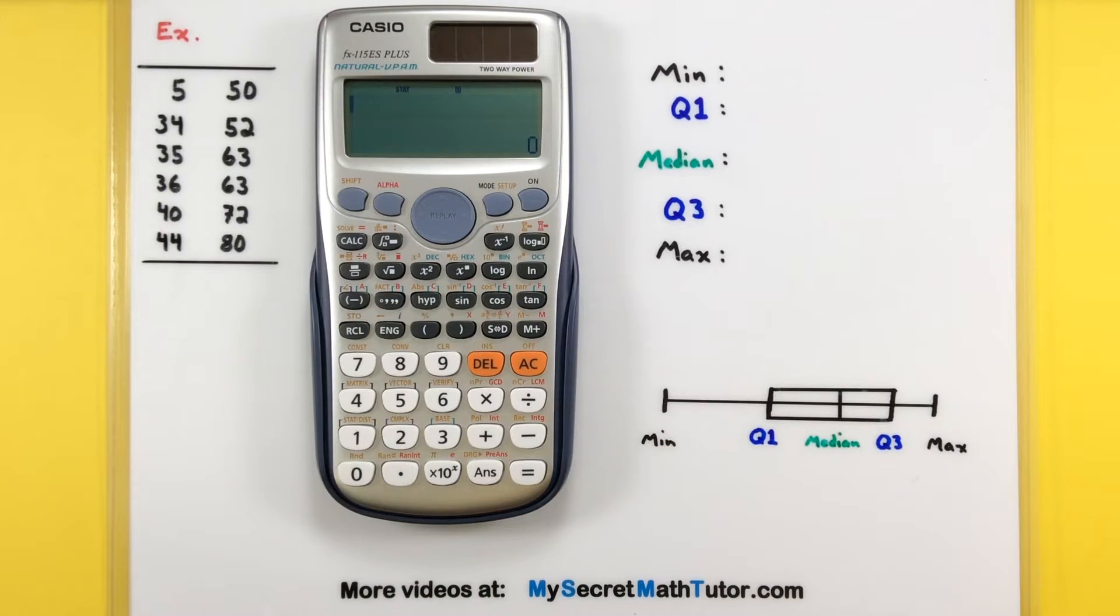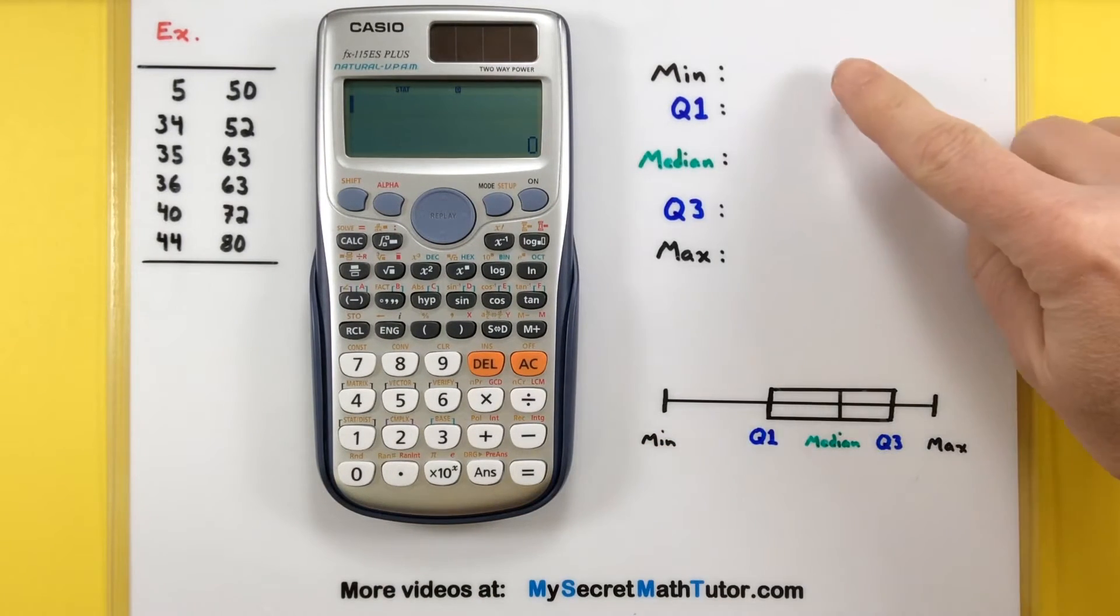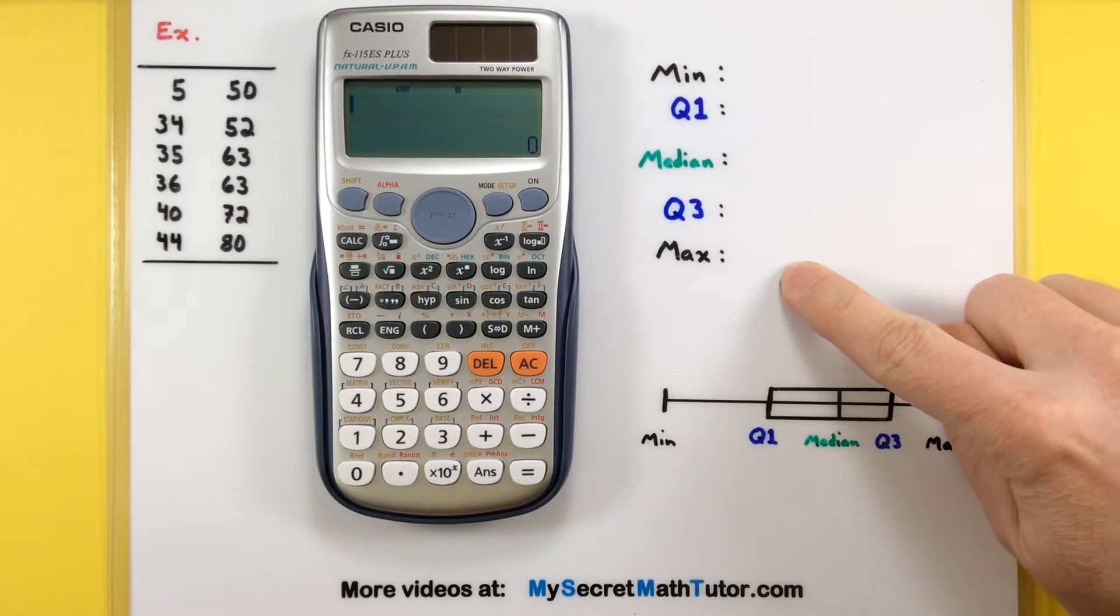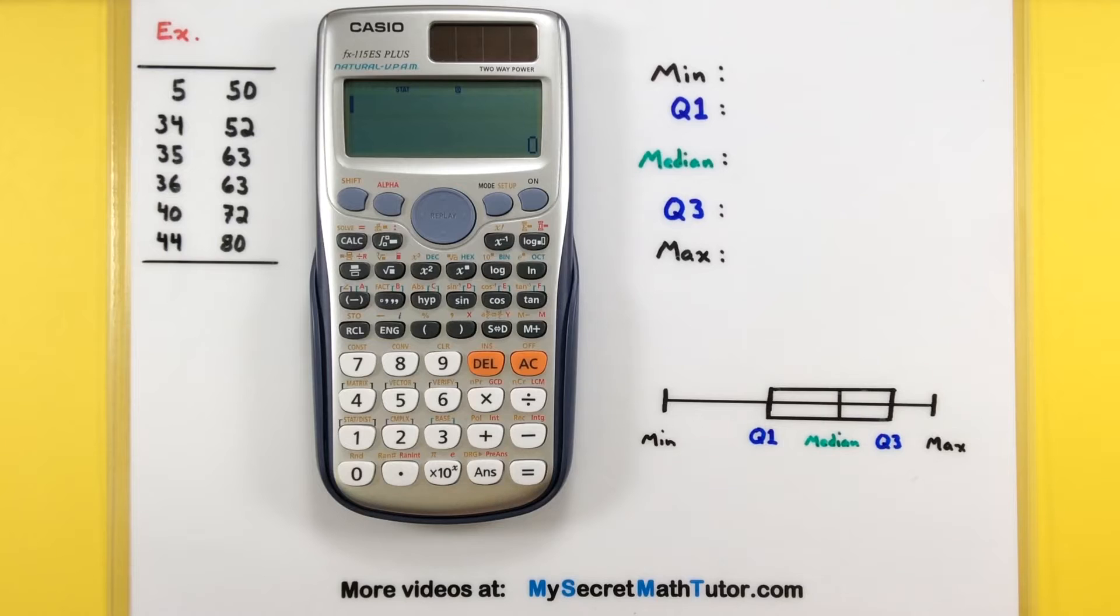So we're going to try and get our data into this calculator and then calculate the minimum, the first quartile, the median, the third quartile, and the maximum. So let's get on to step one, getting that data into the calculator.